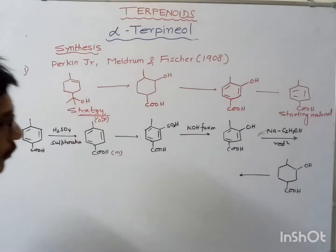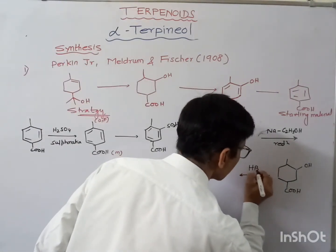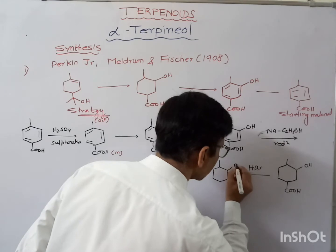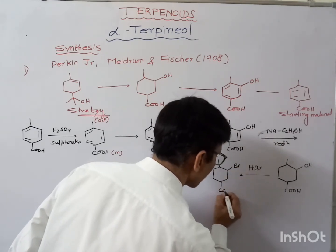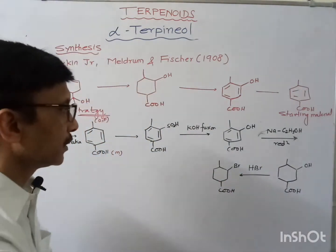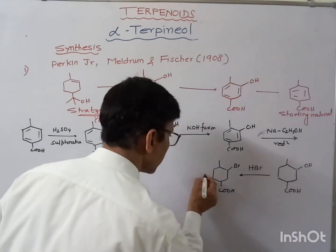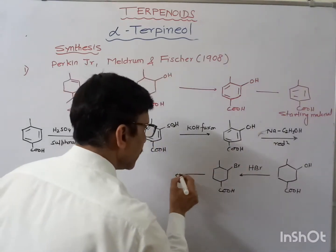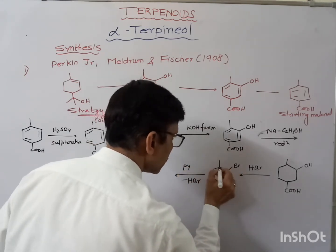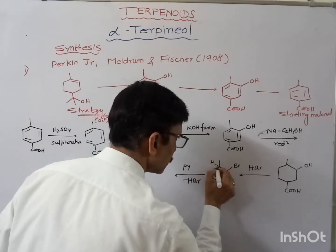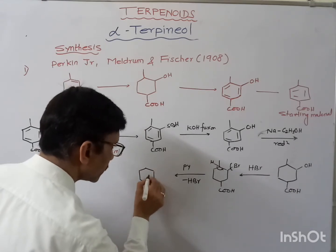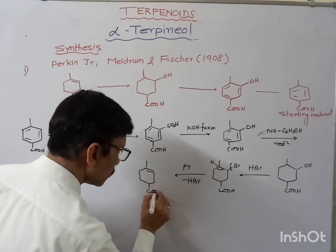Now we have to bring one of the double bonds in. In the presence of HBr, the OH group would be replaced by HBr. HBr being a good leaving group, it is introduced, and then in the presence of pyridine, the H and Br are eliminated to give a double bond, leaving the COOH group intact.